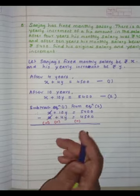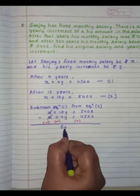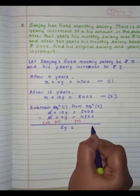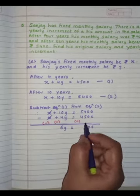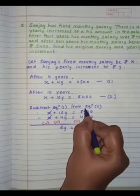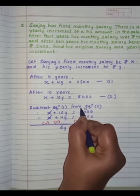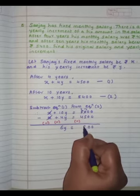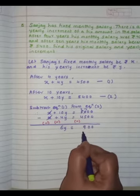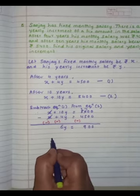So this plus X and minus X will get cancelled. 10 minus 4Y will get answer 6Y is equal to... 14 minus 5 is 9, and 4 minus 4 is 0. Hence, we got 6Y is equal to 900.